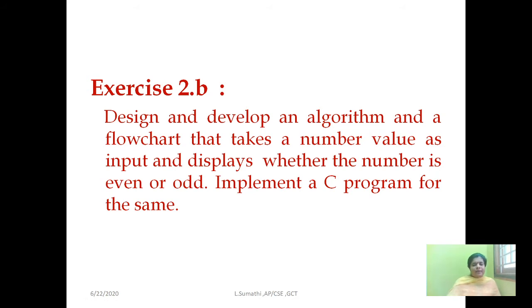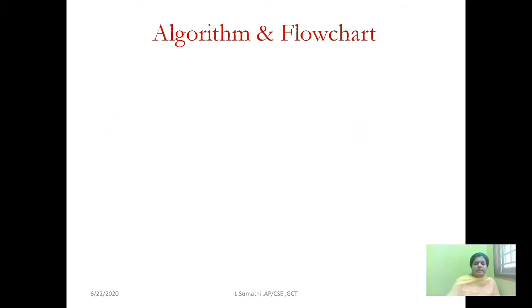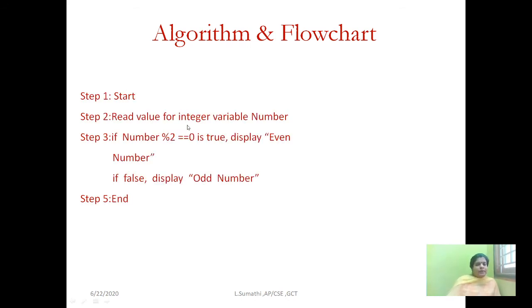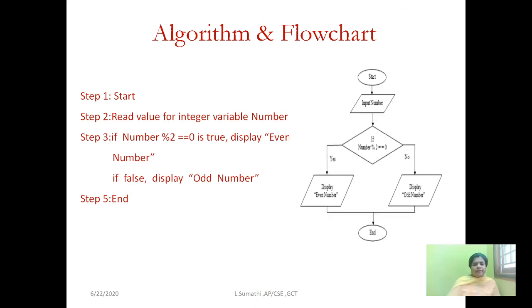We will see a program to find whether a number is even or odd. First, the algorithm: read the value, then apply the modulus operator. As we know, modulus returns the remainder — if the remainder is 0, it is an even number; otherwise it is an odd number. The flowchart: read the value, apply the condition. If true, display 'even number'; if false, display 'odd number'.